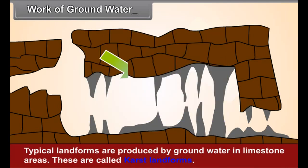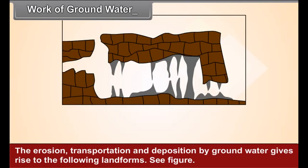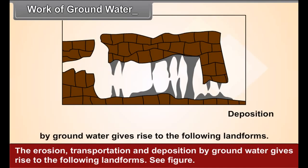Limestone is a good example of this type of work. Typical landforms are produced by groundwater in limestone areas. These are called karst landforms. The erosion, transportation, and deposition by groundwater give rise to the following landforms. See figure 10.1.